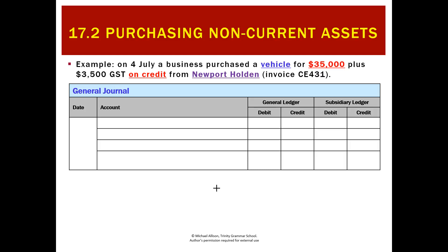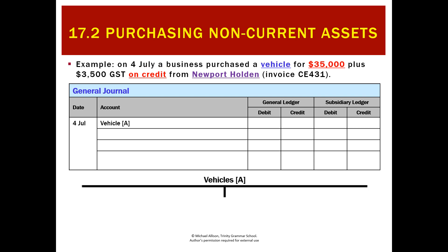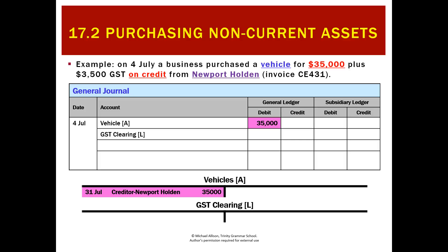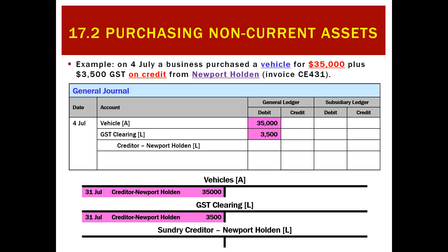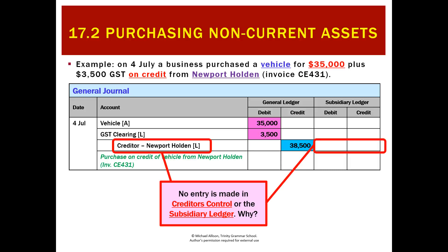Now for something new: buying a new vehicle for $35,000 from Newport Holden on credit. For the first time, we record this in the general journal. We enter the date, debit the vehicle account for $35,000, debit GST to decrease our GST liability, and credit Newport Holden as a creditor — a liability going up. We have two debits matching one credit. Notably, no entry is made to creditors control and the subsidiary columns are left blank.